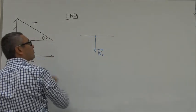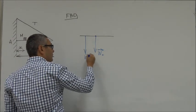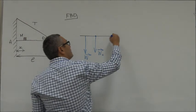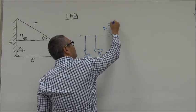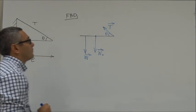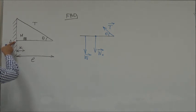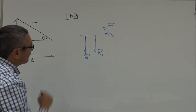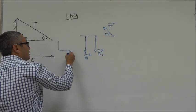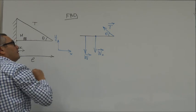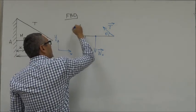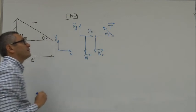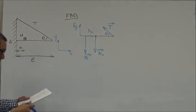Then there is the weight of the block at distance X from the wall. Then there is the tension force pointing at an angle theta, and then there is the reaction force from the hinge at point A. We don't know the actual direction of that force, so we write its components. Let's introduce X and Y axes, with R-X and R-Y as the components of the total reaction force R.